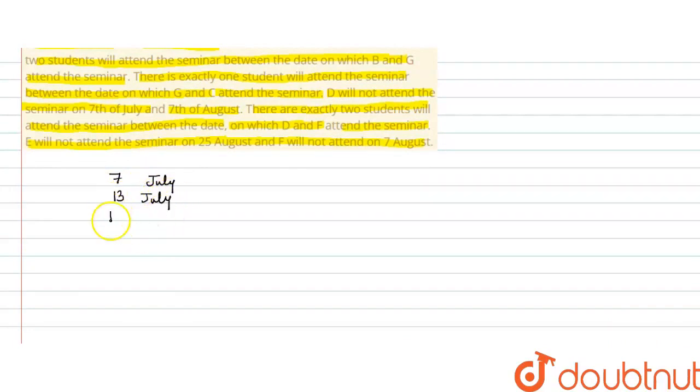The dates given are: 7th July, 13th July, 19th July, 25th July. Uske baad August month ka date hoga — 7th August, 13th August, 19th August, 25th August.